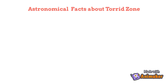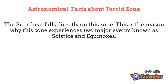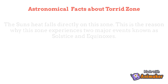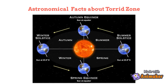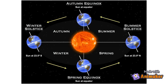Astronomical facts about the Torrid Zone: the sun's heat falls directly on this zone. This is the reason why this zone experiences two major events known as solstice and equinoxes. When the sun is at its greatest distance from the equator, this event is called the solstice.